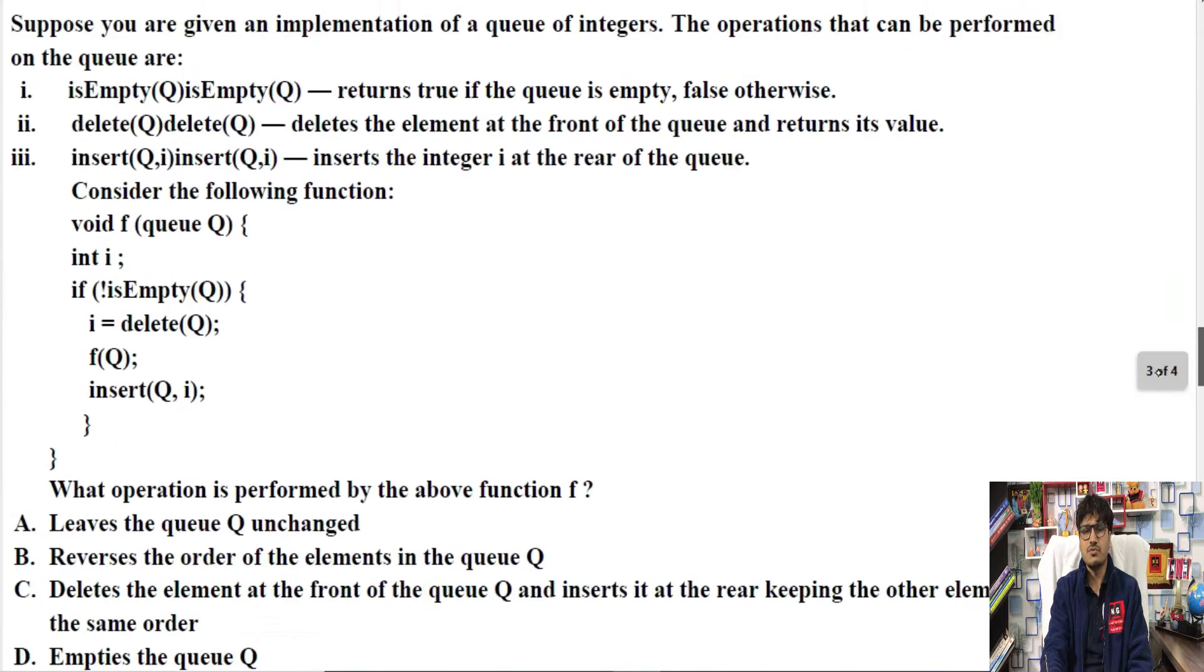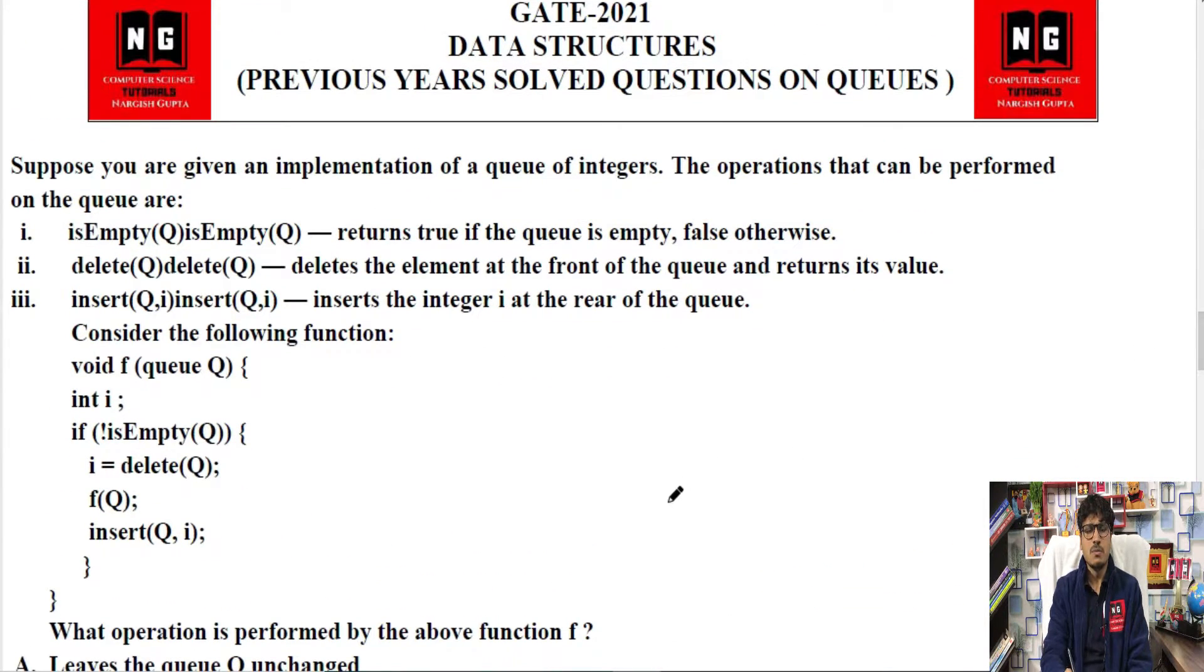Now next question: suppose you are given an implementation of queue of integers. The operations that can be performed on a queue are: is_empty means the queue is empty - returns true if the queue is empty, otherwise returns false.